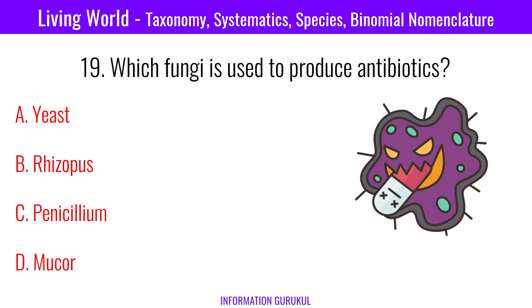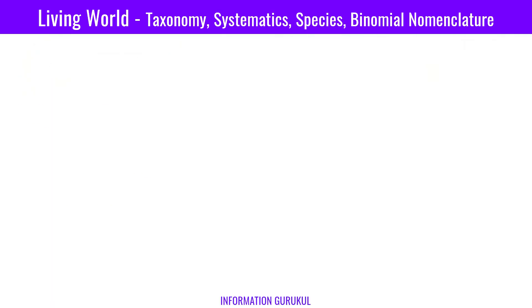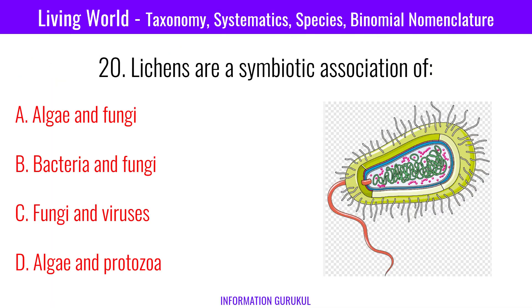Which fungi is used to produce antibiotics? Penicillium. Lichens are a symbiotic association of? Algae and fungi.